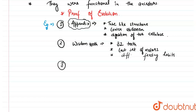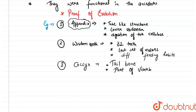There are multiple vestigial organs in the human body. The next one is the coccyx, which is the tailbone. It is a part of our vertebral column and is considered vestigial because it is the remaining or residual part of the tail. So the coccyx is a remnant tail structure forming part of our vertebral column.